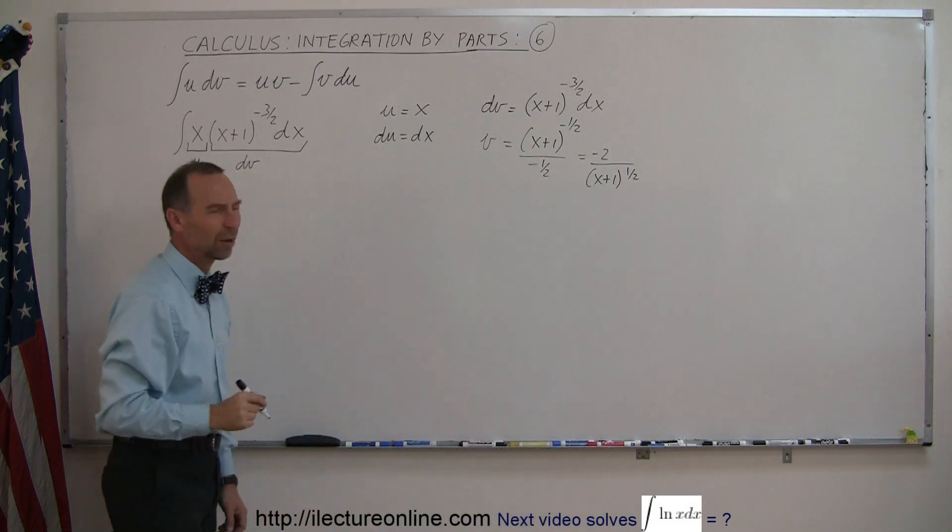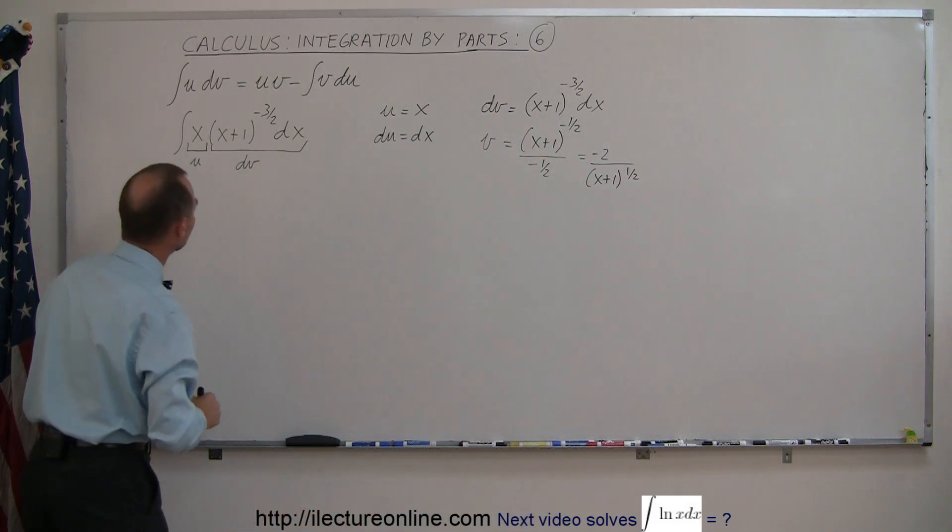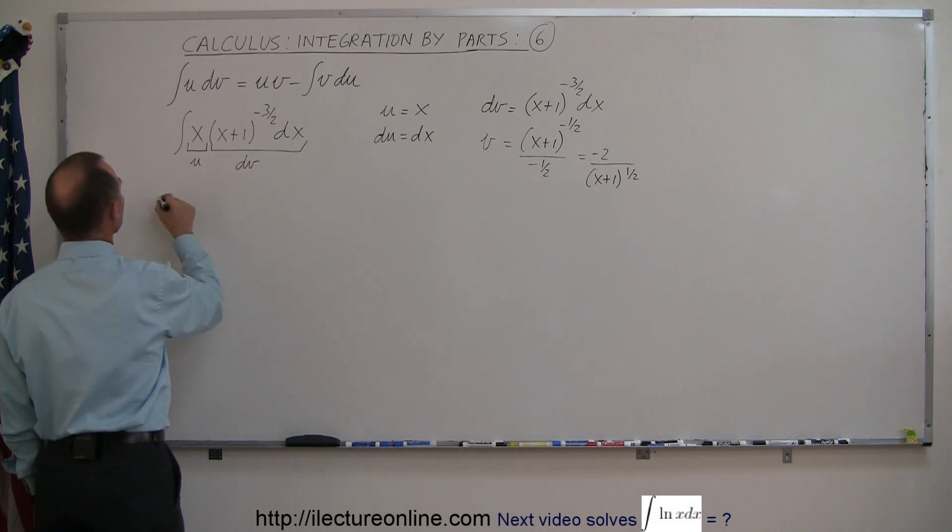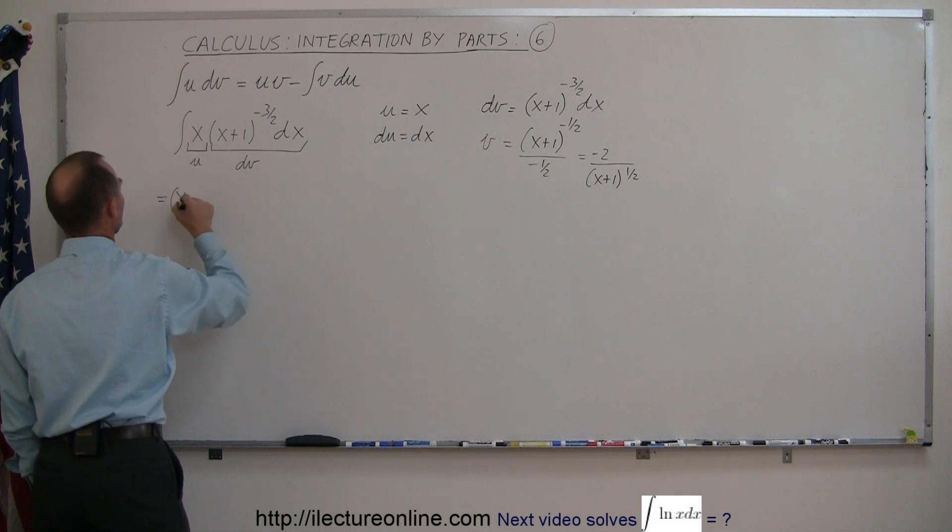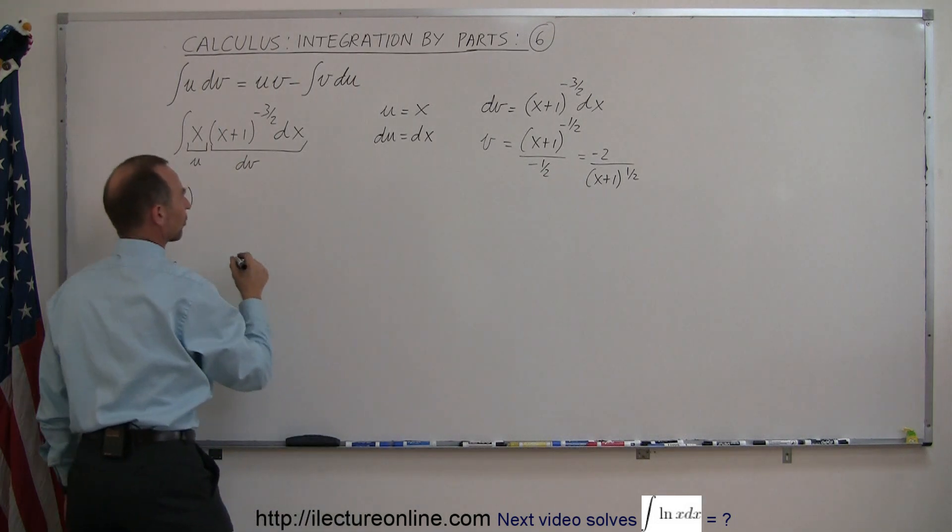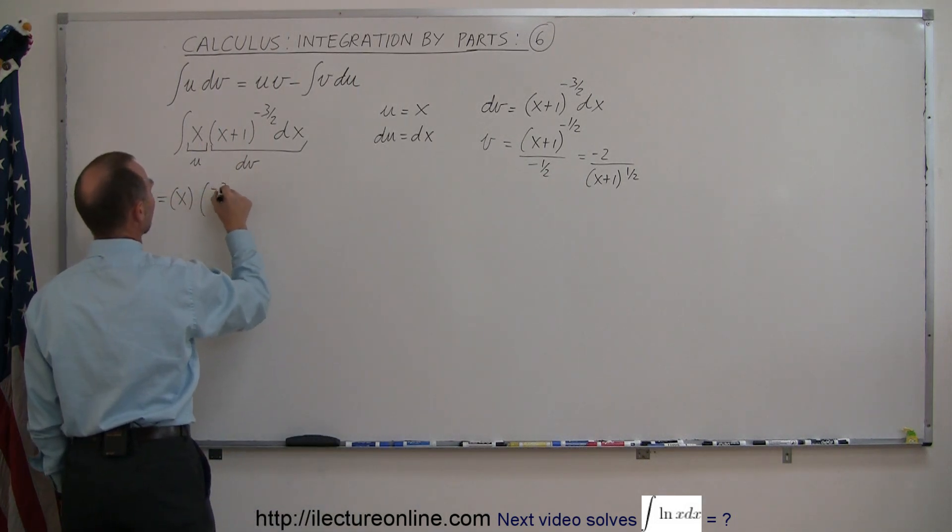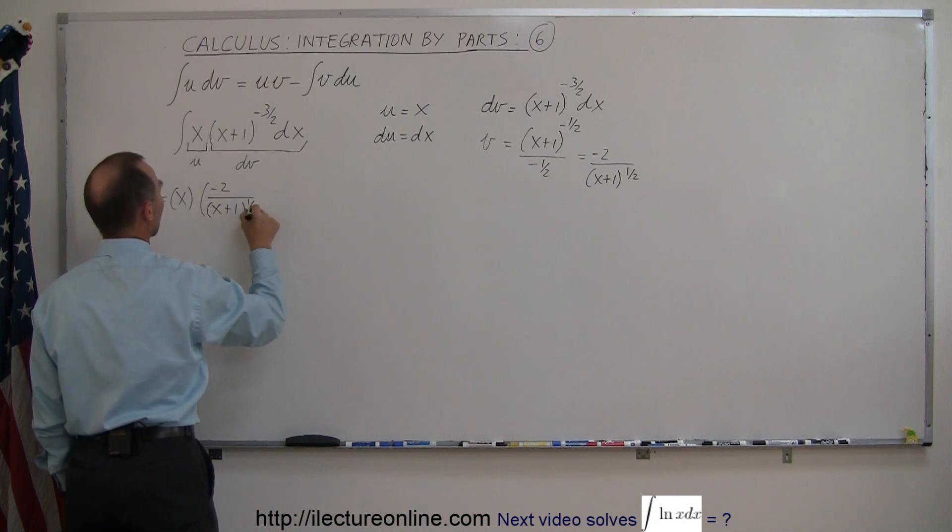All right let's take a look. This is going to be equal to u times v. Our u is x and our v is this quantity right there. So let's write it as minus 2x over (x+1) to the 1 half power.